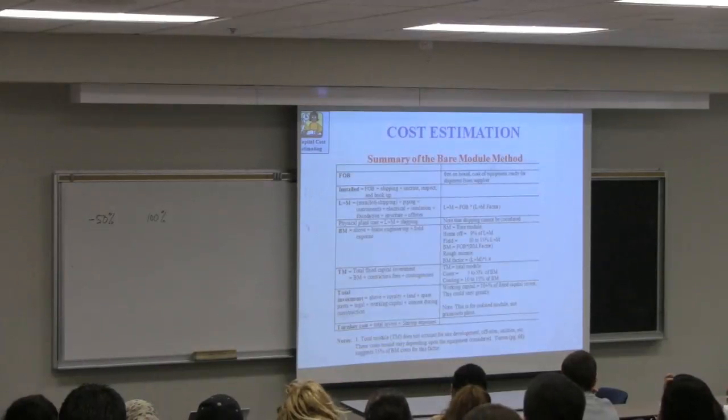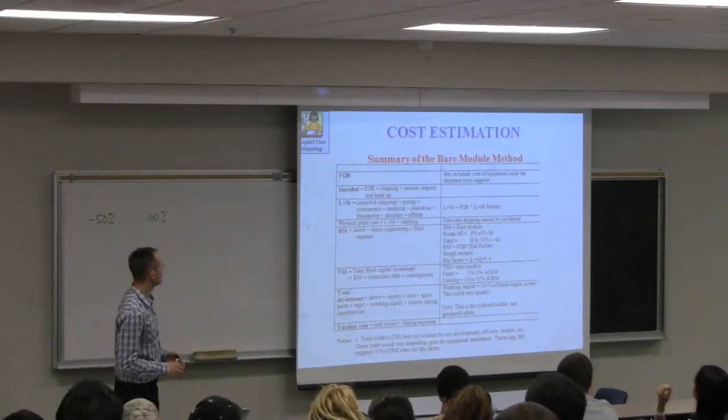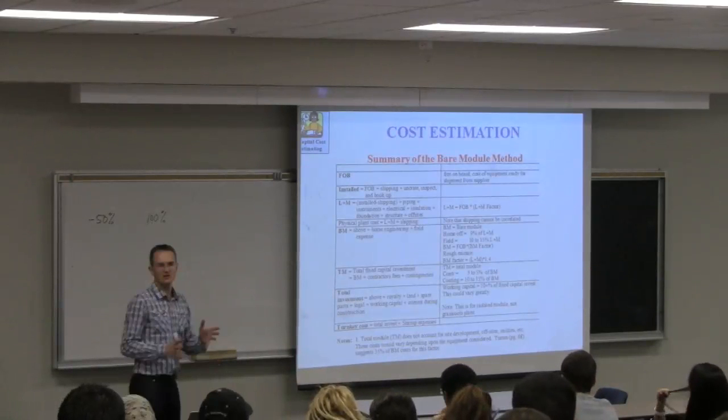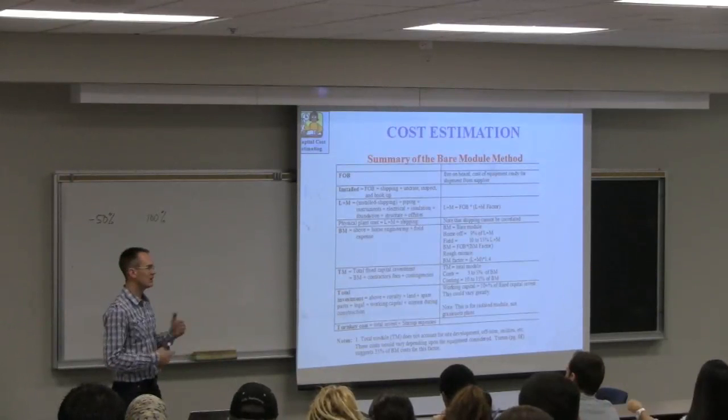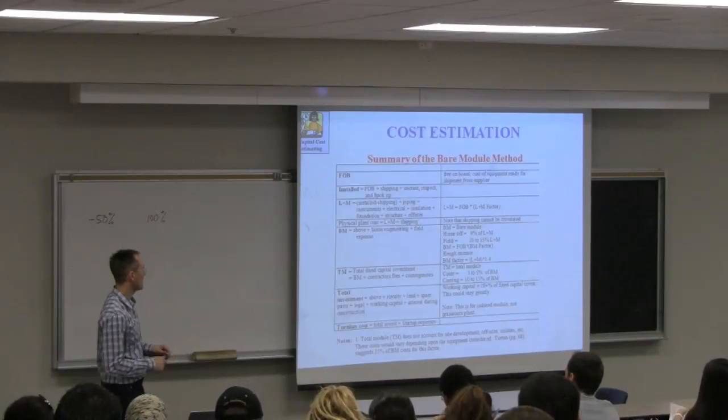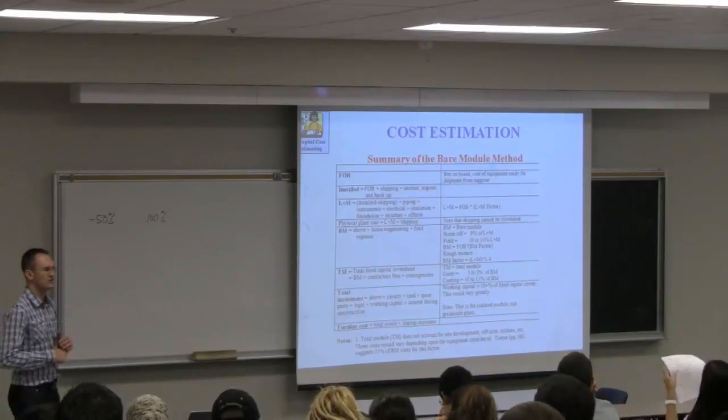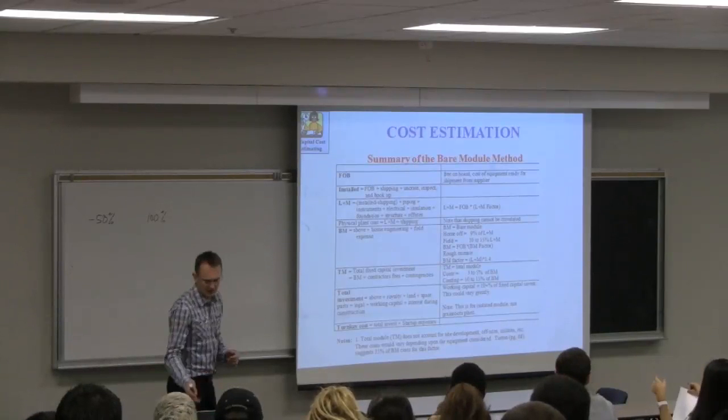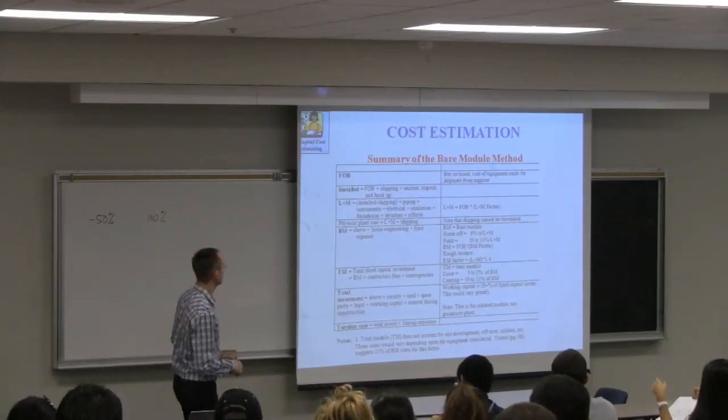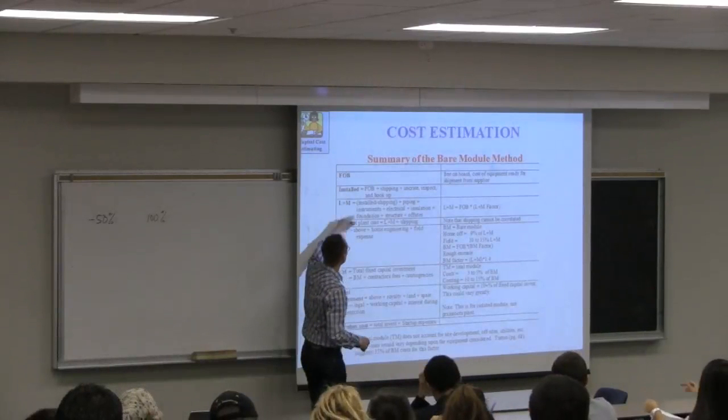So we're going to take a database cost for a known design at a particular point in time for a very specific configuration. Then we're going to multiply it by a capacity factor. So if this original design for a heat exchanger, for example, was for 100 meters squared, but our needs are for 400 meters squared, we're going to multiply up this base case of 100 meters squared by an appropriate factor for our needs.